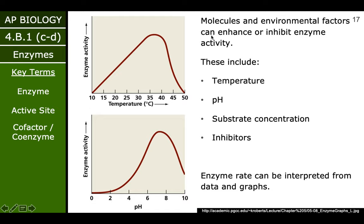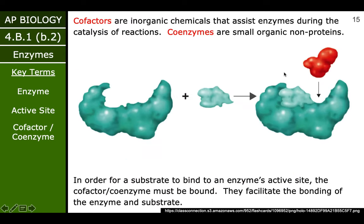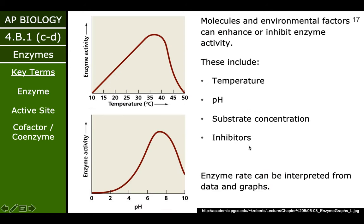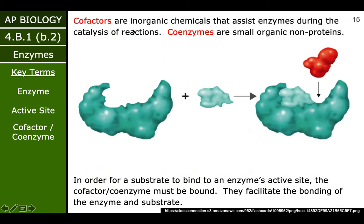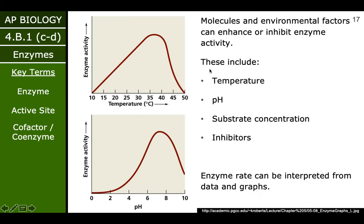Remember from Chapter 5 that enzymes are proteins, and proteins have specific factors that need to be just right in order for them to do their job. Factors that might be important for an enzyme could be temperature and pH — those are going to be the most common ones we talk about. Also substrate concentration — how much of the substrate there is — if there's a lot of it, it's going to bind more often. Inhibitors basically stop enzymes from doing their job, so they're kind of the opposite of a cofactor. You can see enzyme activity based on these factors.